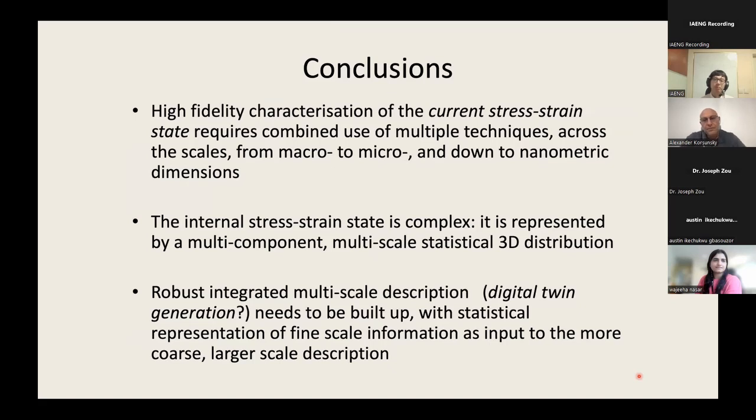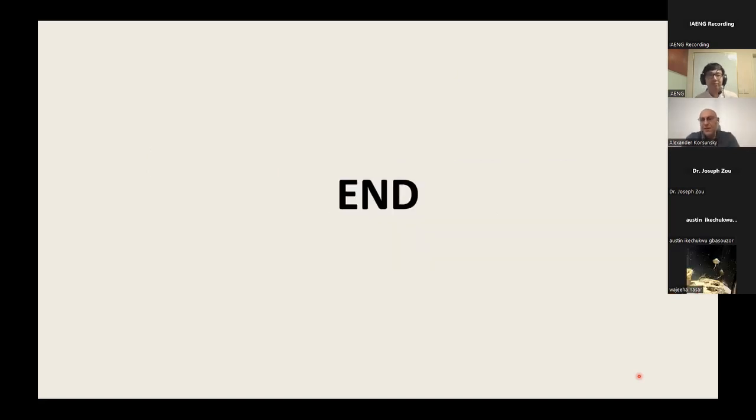To conclude, the use of multiple techniques across scales from microscopic to nanometer dimensions is important to characterize material. The internal stress strain state is complex, multi-component, multi-scale, and statistical. If we want to design airplanes, bridges, and buildings, we need to build up a database with detailed description using statistical representation for fine scale, then go to larger scale description for engineering purposes. Thank you very much, that's where I'll end.